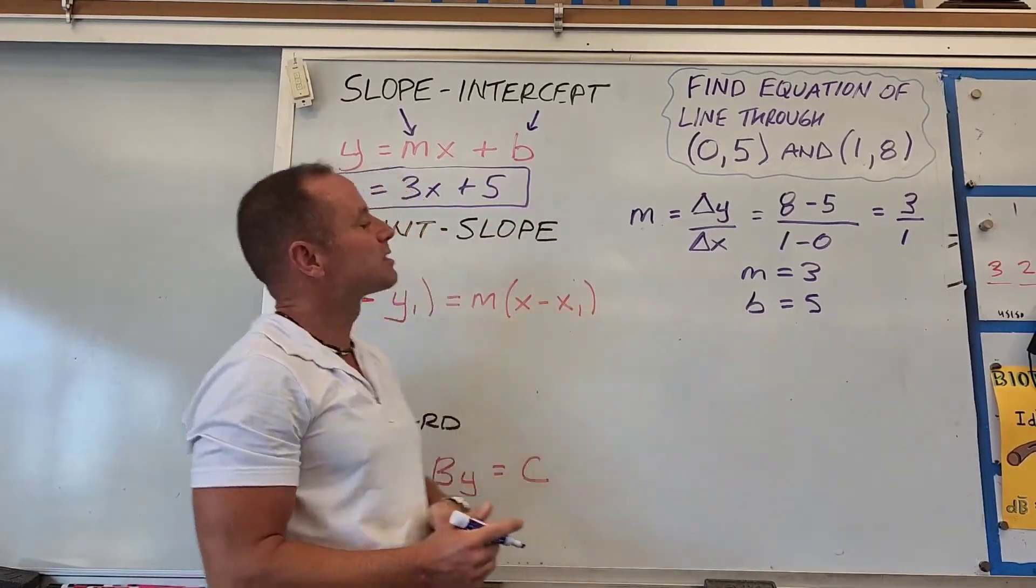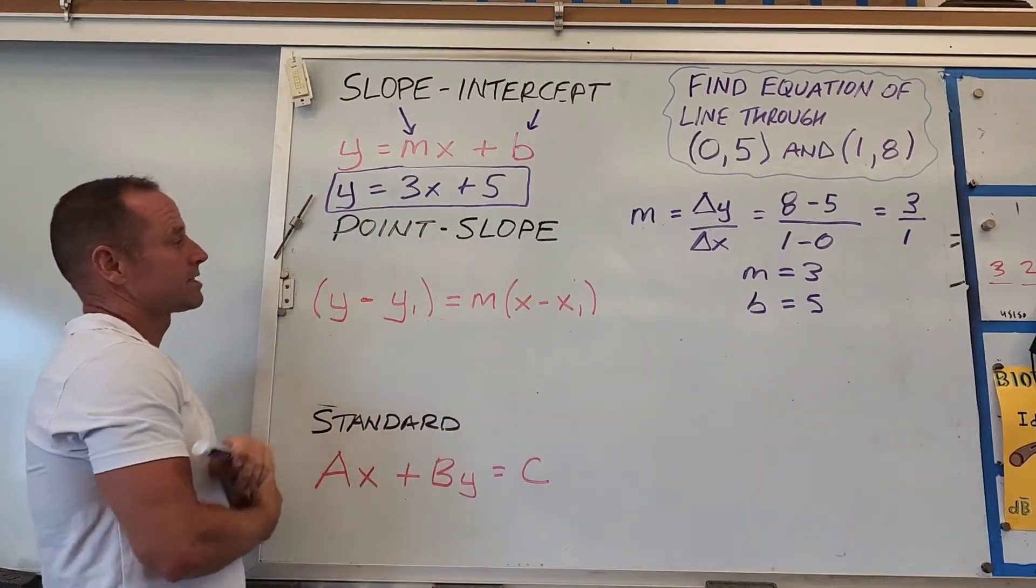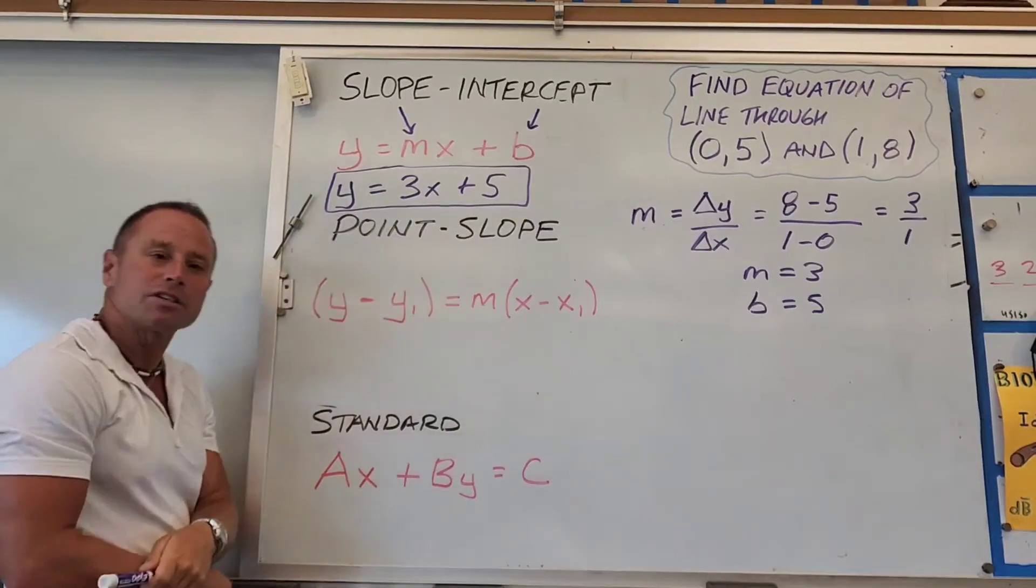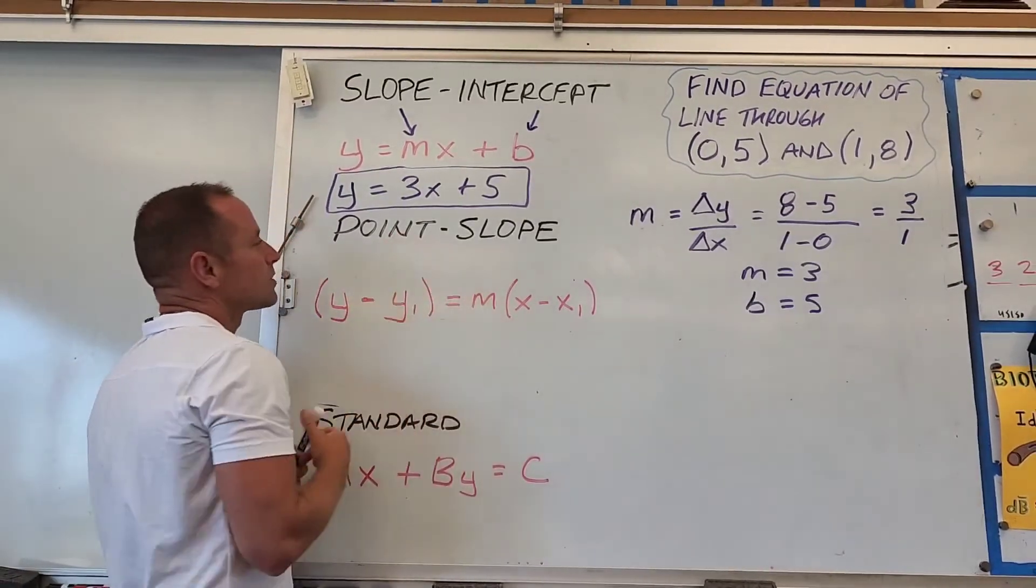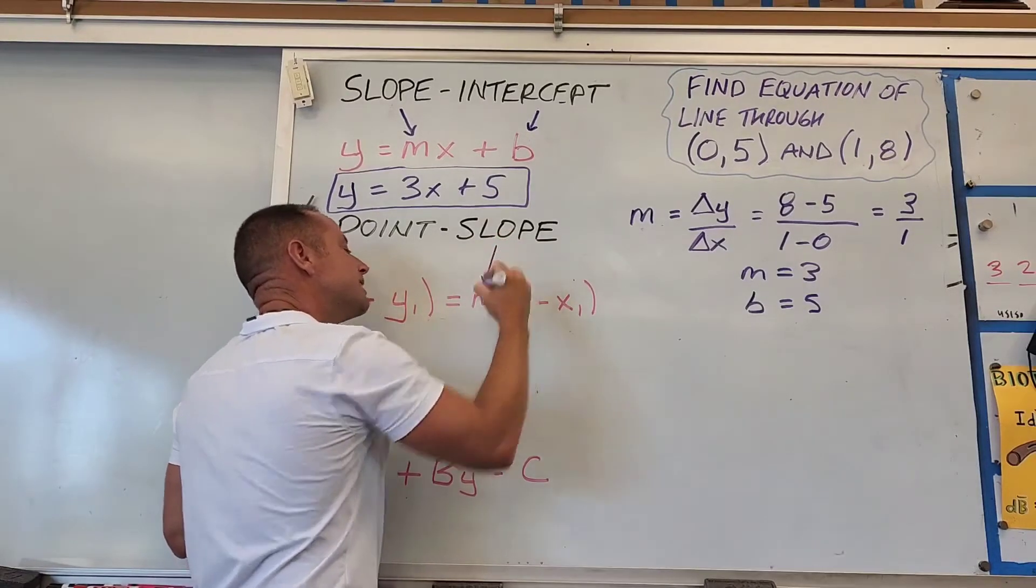Now that we have the slope and intercept, it's easy to write the other form. This is called point-slope form. You'll recognize the slope from what we just did.